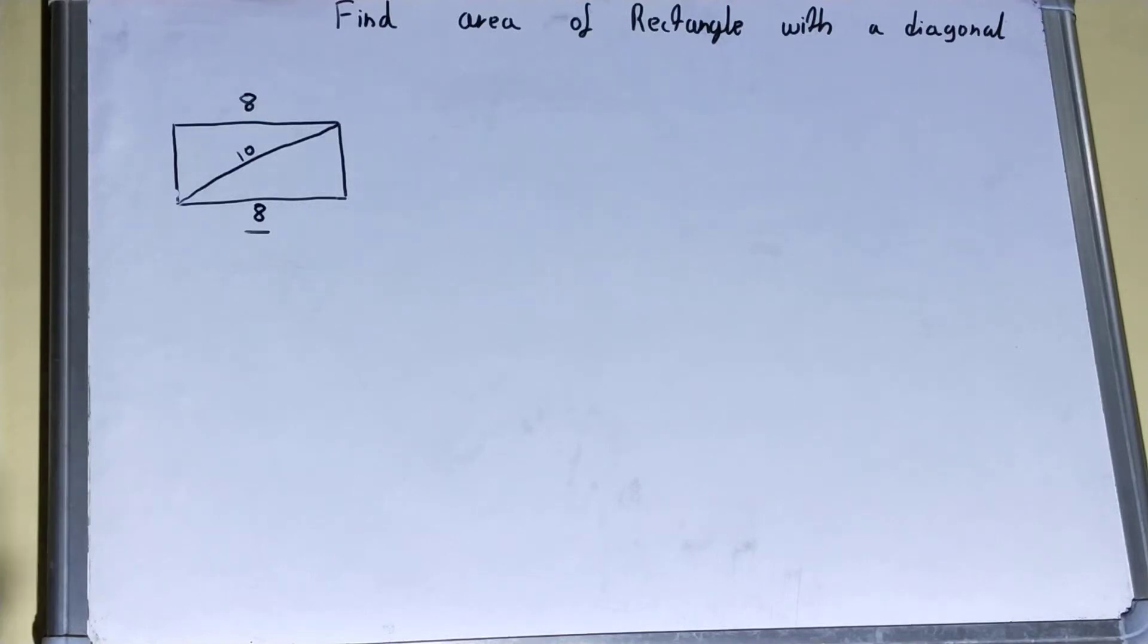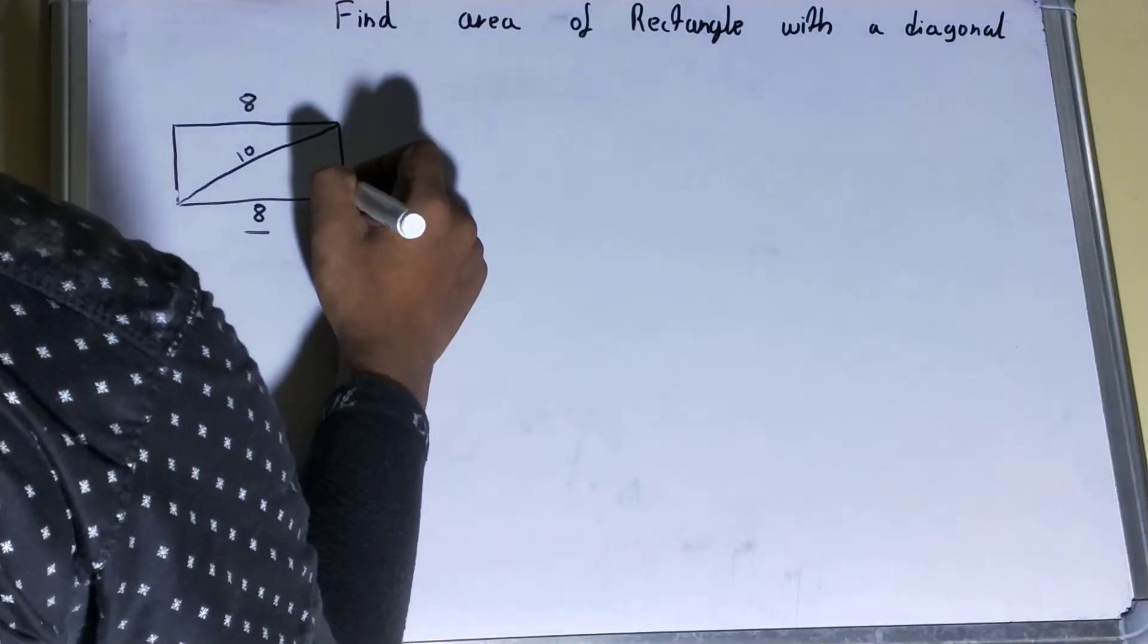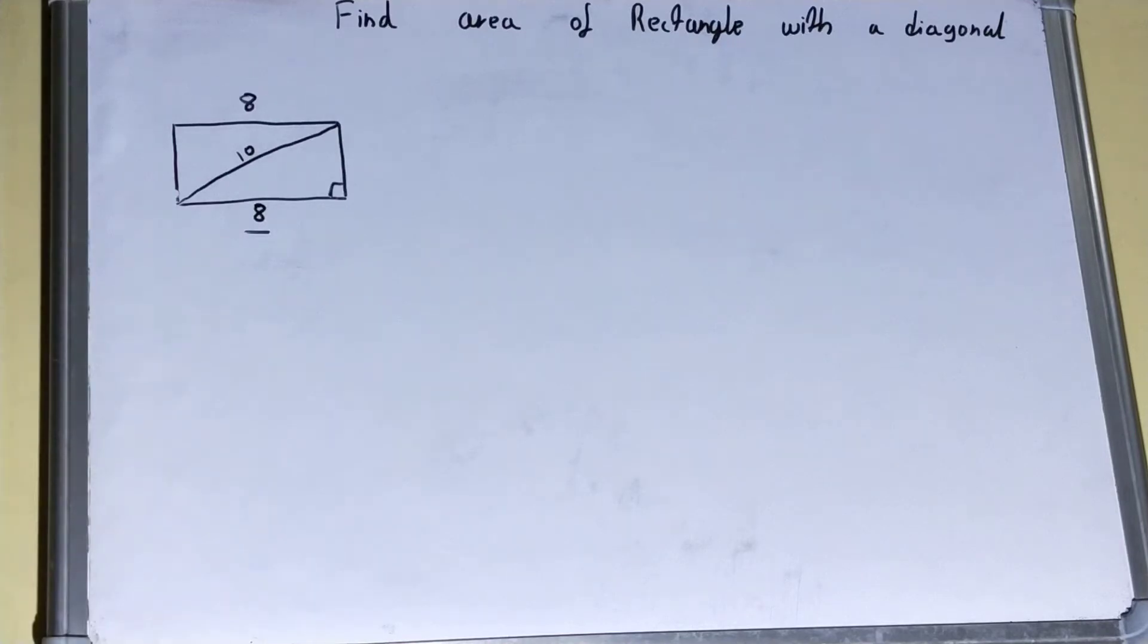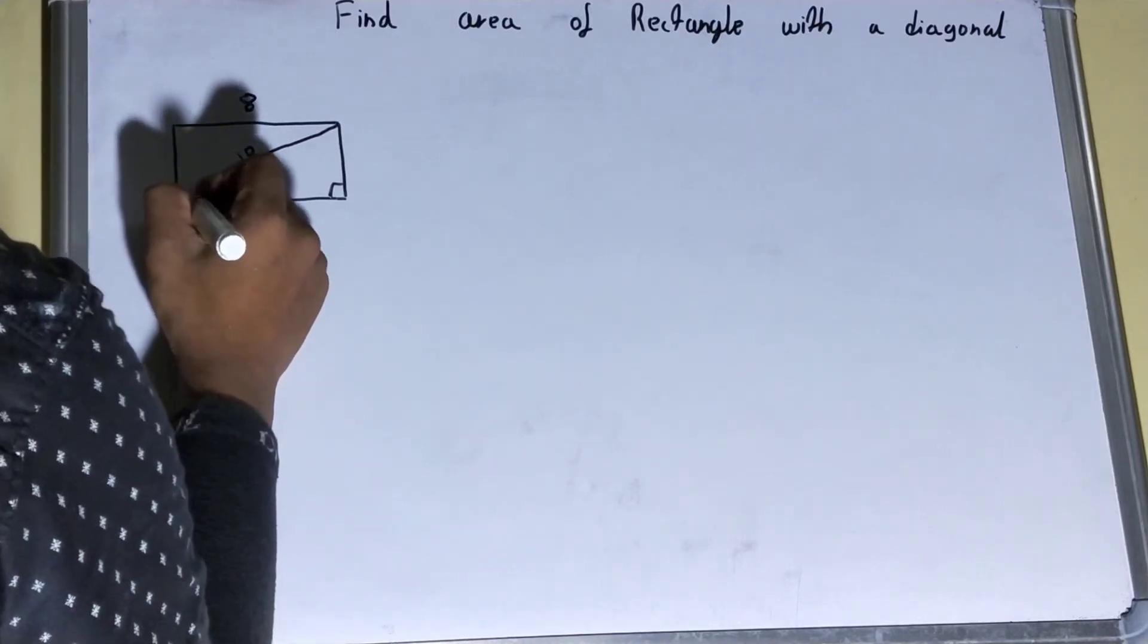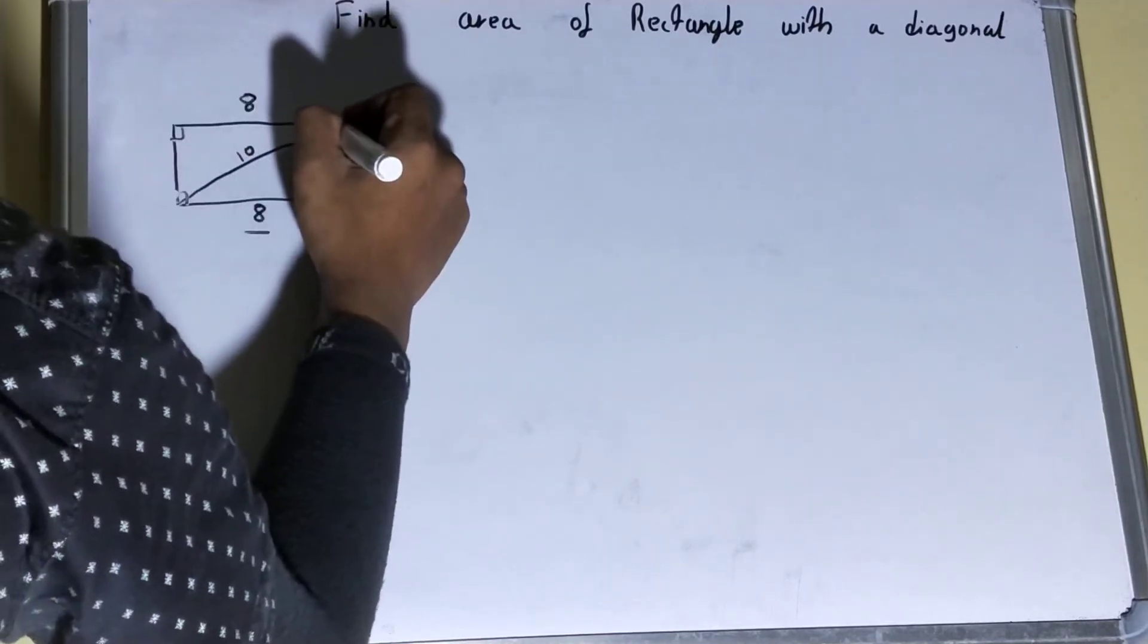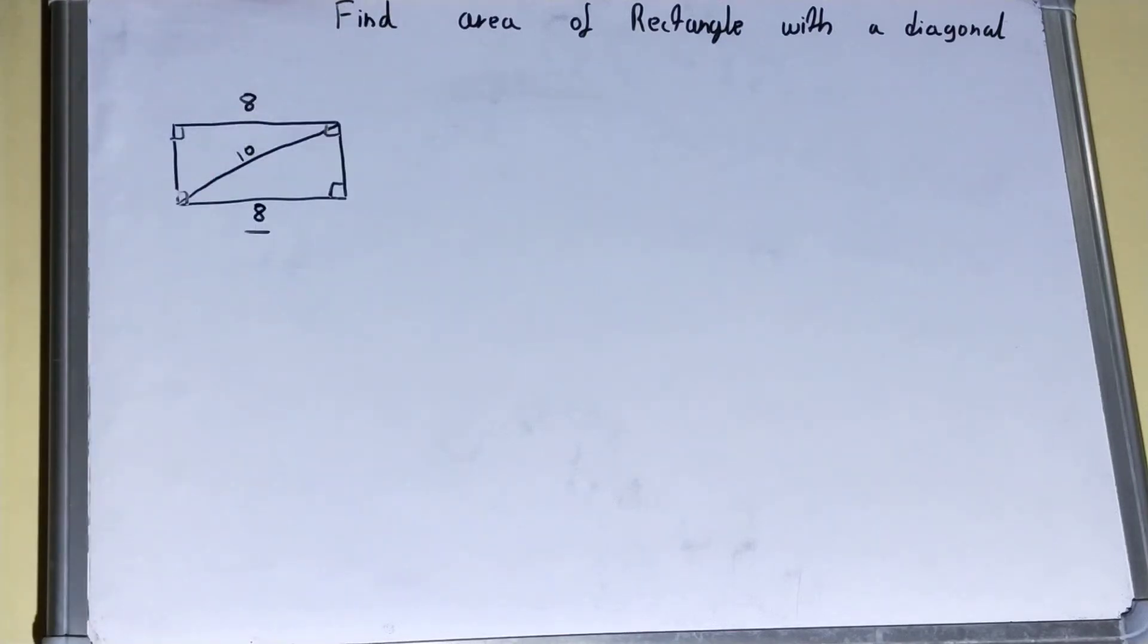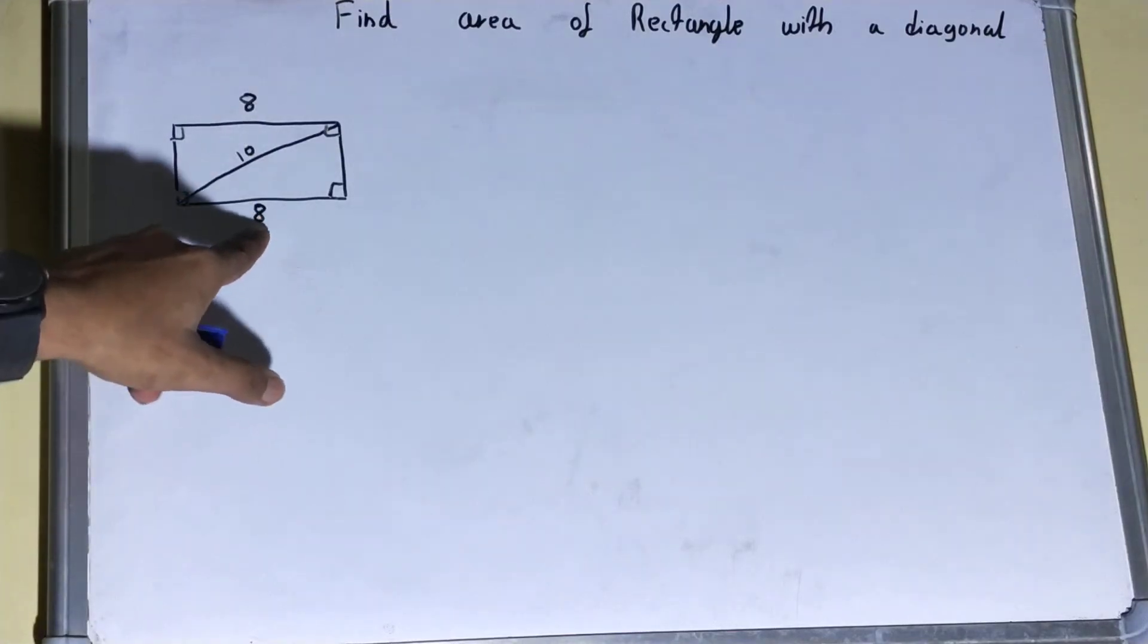We are given with the diagonal and one more property of a rectangle is the adjacent angle, the sides making the angle with the adjacent sides is 90 degrees. So all will be 90, this will be 90, this will be 90 as well.